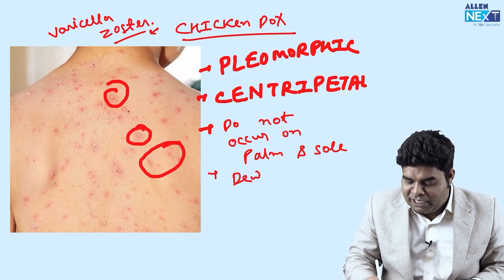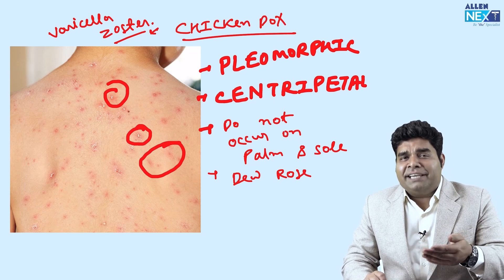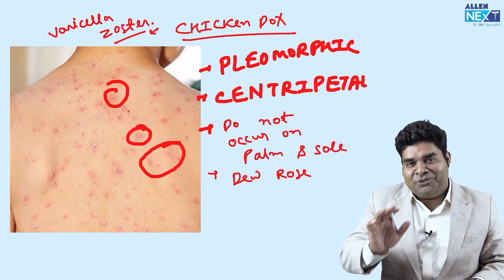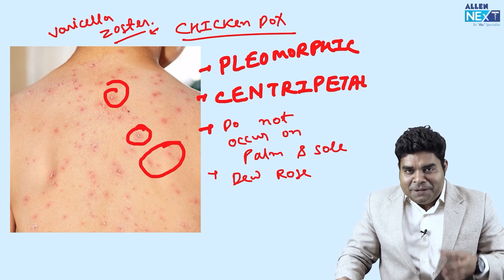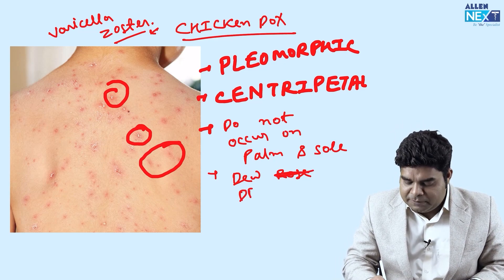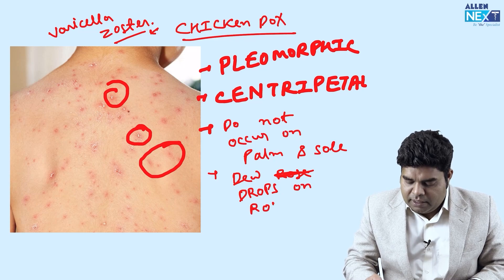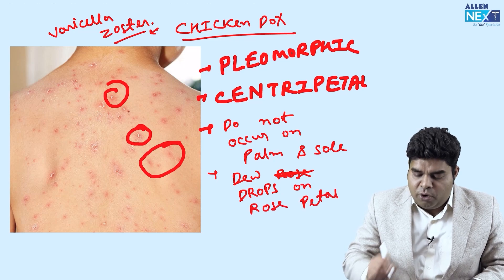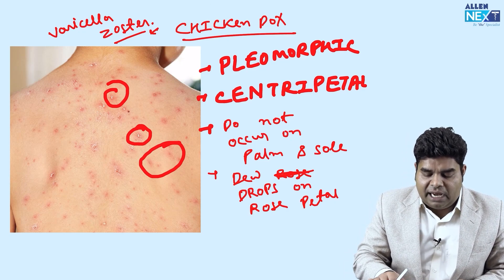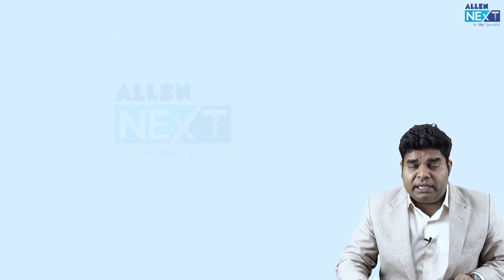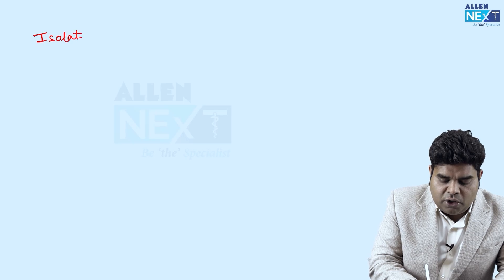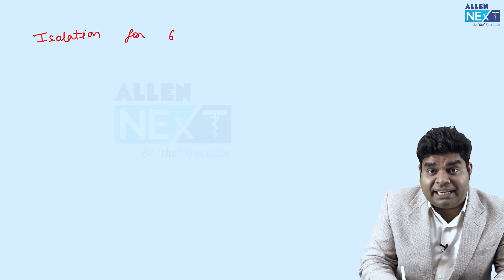'Dew drops on rose petal' actually means it is just a pus-filled vesicle, but see the beauty in the eye of the beholder — he sees it as dew drops on a rose petal. So these are the four characteristics of chickenpox rash. In a recent NEET exam, they asked: what is the isolation period for chickenpox? If anyone develops chickenpox, we will isolate the person for six days.